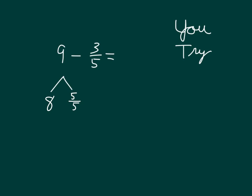Right, it could be decomposed into 8, and also with 5 fifths. So we have 8 plus 5 fifths minus 3 fifths, which equals 8 plus 5 fifths minus 3 fifths, which is 2 fifths, which is 8 and 2 fifths.